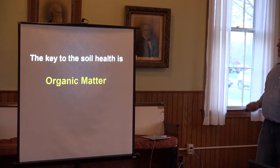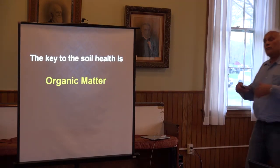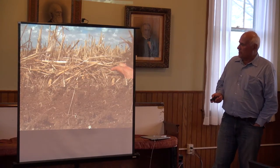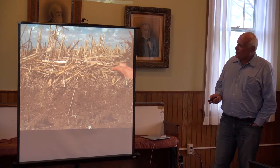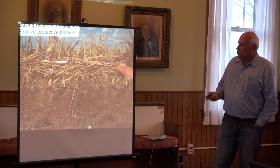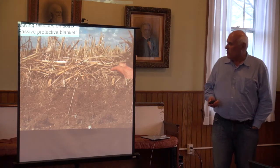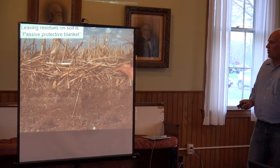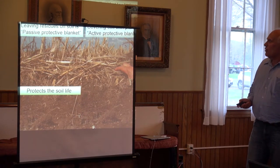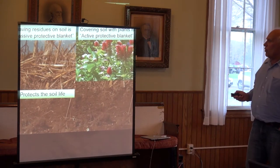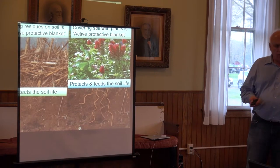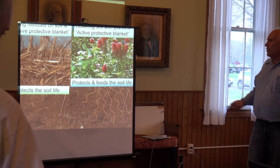Most of us already know that the key to soil health — in order to perform all of those functions we expect from soil — is organic matter. That's a soil covered with residues. Yes, it's much better than bare soil, but this is just passive protection. It provides some protection from erosion, but it's not what I mean by covering the soil. What we need is an active protective blanket that not only protects the soil but also feeds the soil. We have to have growing plants — and if it's not our crop, we call them cover crops.